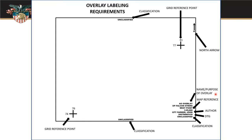The information block includes the name and purpose of the overlay, the map reference so someone knows what map this goes with, who did it — so that's your name usually if you're the one filling it out — and the date-time group, so we know which one it is and whether it's current. If I find two of them, which one's the newer one that I need to go by? We should also put a classification on the information block. That's everything you should have on an overlay.